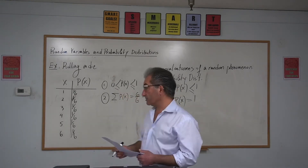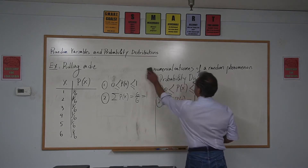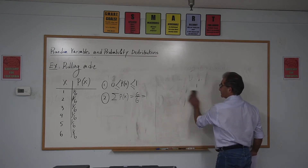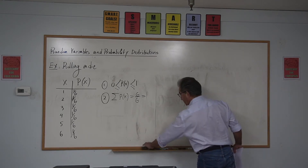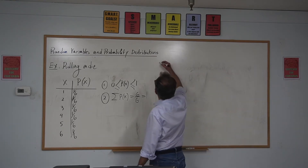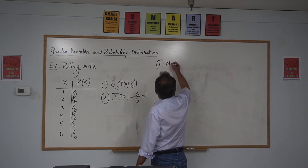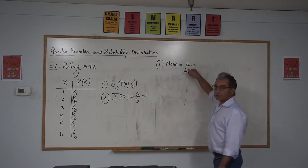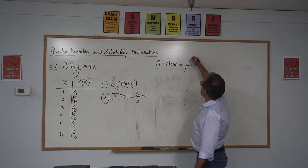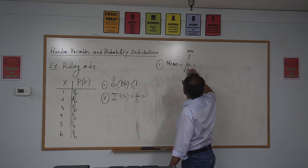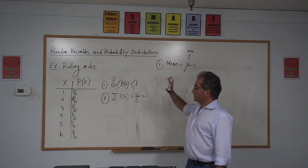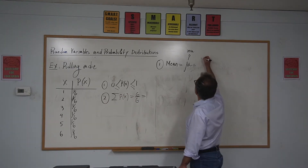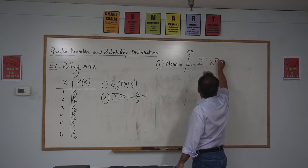Now let's see what we can do with a probability distribution. We can find the mean. Number one, the mean — that's mu. Mu is the population mean. Since probability is very general, we always use the population notation. And the formula is the sum of X times P(X).